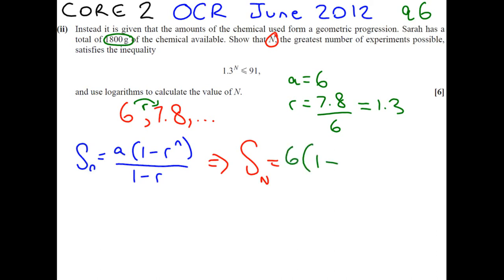And we can substitute the other values into our formula. 6, 1 minus 1.3 to the big n, which is our unknown, over 1 minus 1.3. So, if we think about this value, it's got to be less than or equal to 1,800 grams. Because that's the only chemicals we've got, 1,800 grams worth.